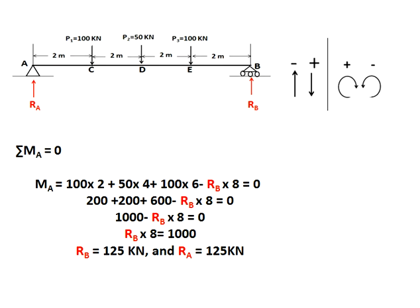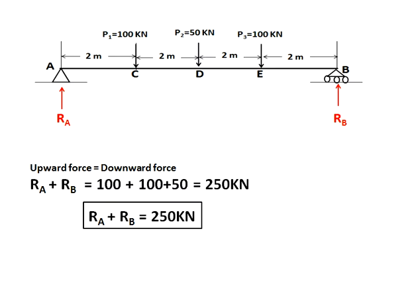To find one more equation, we consider moment at A equals zero. This is a pin support, so moment at A is zero. My sign convention: clockwise is positive, anti-clockwise is negative. So 100×2 plus 50×4 plus 100×6 minus RB×8 equals zero, giving RB equals 1000 divided by 8, which is 125.